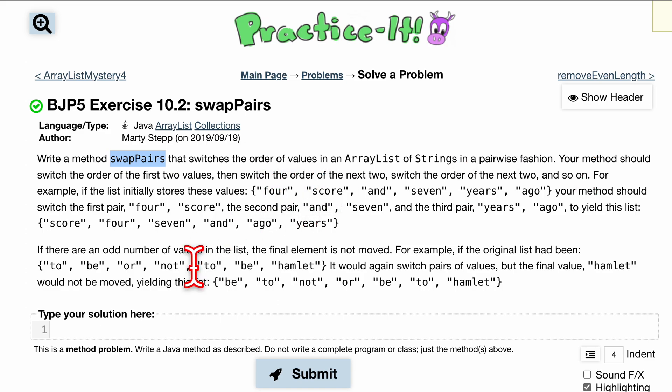It gives us an example here, and if there's an odd number of values in the list, the last value should not be switched. So we're going to handle that first and then we're going to go through our list.